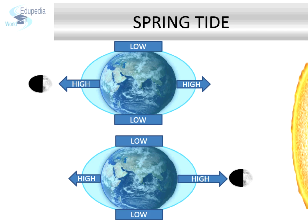Spring Tide. Twice in a month — on full moon and on new moon — the Earth, Moon and Sun are in line and we experience higher water levels than normal high tides. This happens due to the combined gravitational pulls of the sun and moon. Such high tides are called spring tides. During a spring tide, the parts of Earth facing the moon and those facing the sun experience the highest high tides, while the other two parts experience the lowest low tides.